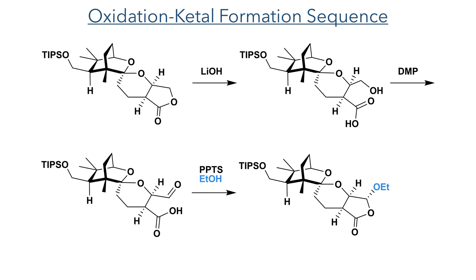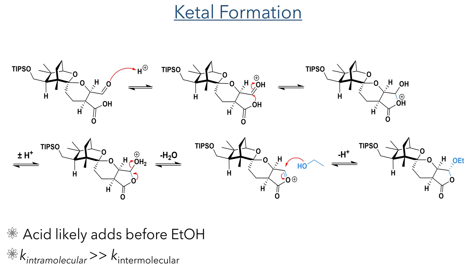The next step was an oxidation-ketal formation sequence. The lactone was first hydrolyzed using lithium hydroxide in water to produce a carboxylic acid and primary alcohol. The alcohol was oxidised using Dess-Martin periodinane to generate an aldehyde. Reaction in ethanol with PPTS, a weak acidic catalyst, generated the target ketal. In detail: the aldehyde is first protonated, making the carbon centre more electrophilic; intramolecular addition of the carboxylic acid generates the hemiacetal, which is again protonated and eliminated to form a carbonium electrophile; ethanol, used as solvent, then adds to this electrophile and generates the target ketal.